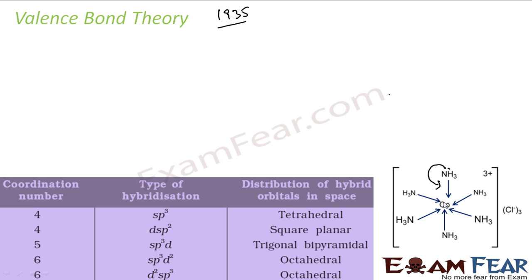Pauling then proposed the valence bond theory. He told that bonding in a coordination compound is due to the overlap of the orbital of the ligand — which has a lone pair of electrons — with the vacant orbital of the metal ion. So these two orbitals overlap and that forms the bond. That was the first postulate.